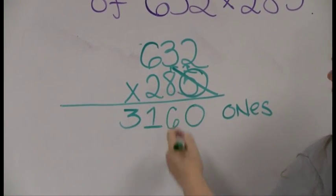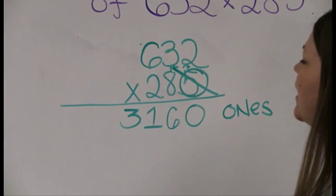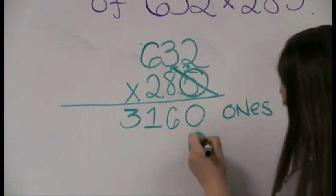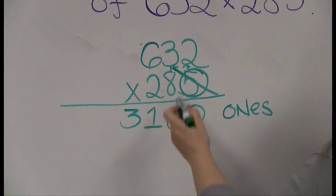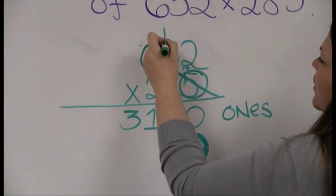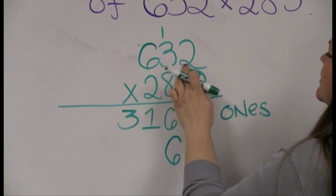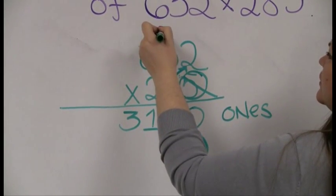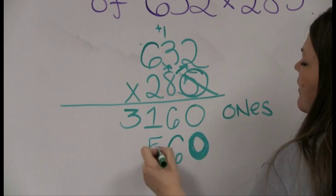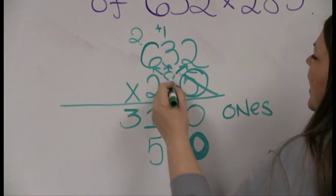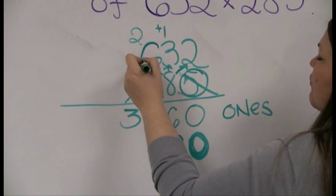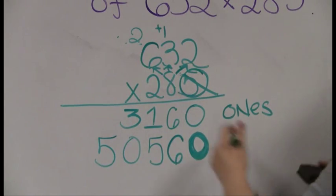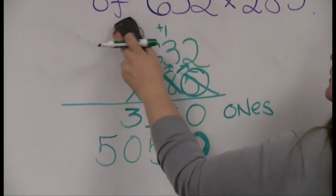Now I pass out the 8. The 8 is in the tens column, so before I begin I put a 0 so numbers start in the tens column. 8 times 2 is 16 — carry a 1. 8 times 3 is 24, plus 1 is 25 — the 5 goes down, the 2 comes up. 8 times 6 is 48, plus 2 is 50. I've passed the 8 out to everybody, so now I erase the carried numbers.